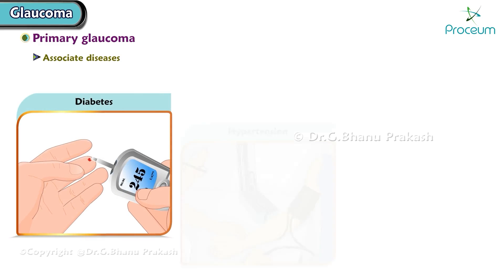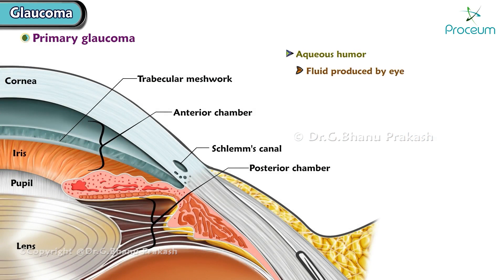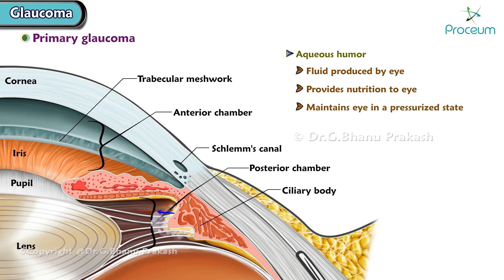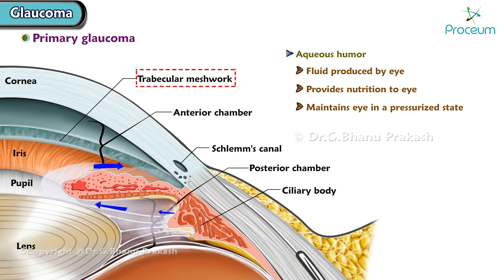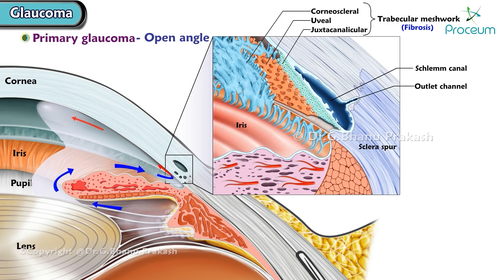Other diseases that predispose to primary open angle glaucoma are diabetes, hypertension, and Graves' disease. Aqueous humor is a fluid produced by the eye that provides nutrition and maintains the eye in a pressurized state. It flows from the ciliary body into the anterior chamber, out through the trabecular meshwork, and into a drainage canal. In open angle glaucoma, fibrosis of the trabecular meshwork occurs, leading to blockade. Maximum resistance is offered by the juxtacanalicular meshwork.